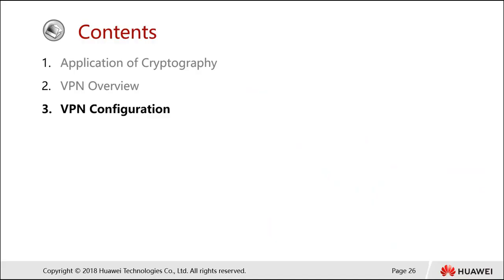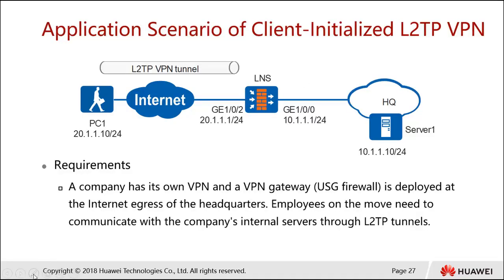Let's look at the third topic, which is VPN configuration. Let's look at the application scenario of the client-initiated L2TP VPN. Here we have a client, PC1, a computer or laptop. The IP is in the 20-something range, and the client goes through the internet and tries to connect to the firewall within the headquarters.